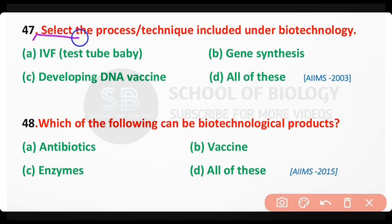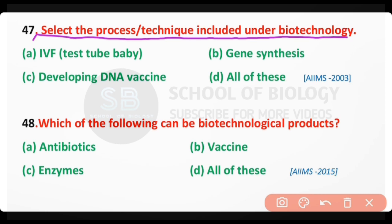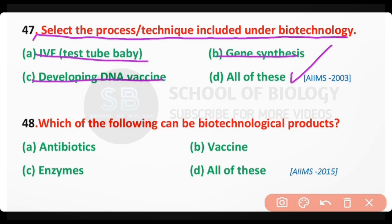Question number 47. Select the process or technique included under biotechnology: IVF, test tube baby, gene synthesis, developing DNA vaccine, or all of these? The correct answer is option D. Gene synthesis, developing DNA vaccine, and IVF test tube baby are all different techniques of biotechnology.